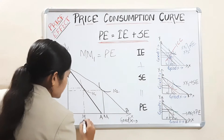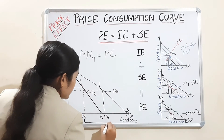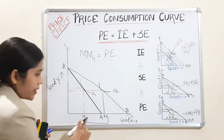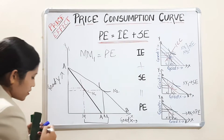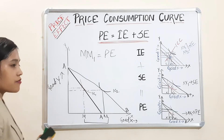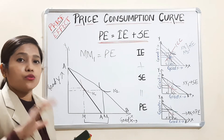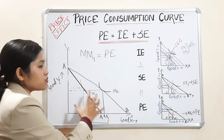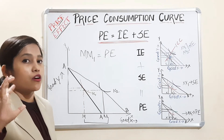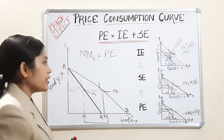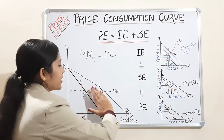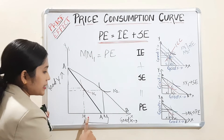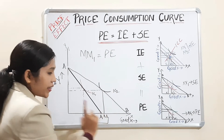Our consumption has increased from M to M1. So M to M1 is your price effect — remember, M-M1 is your price effect. Now we need to use the compensating variation to keep purchasing power constant. This increase from M to M1 is due to increased purchasing power, which increased because the price of the good decreased.